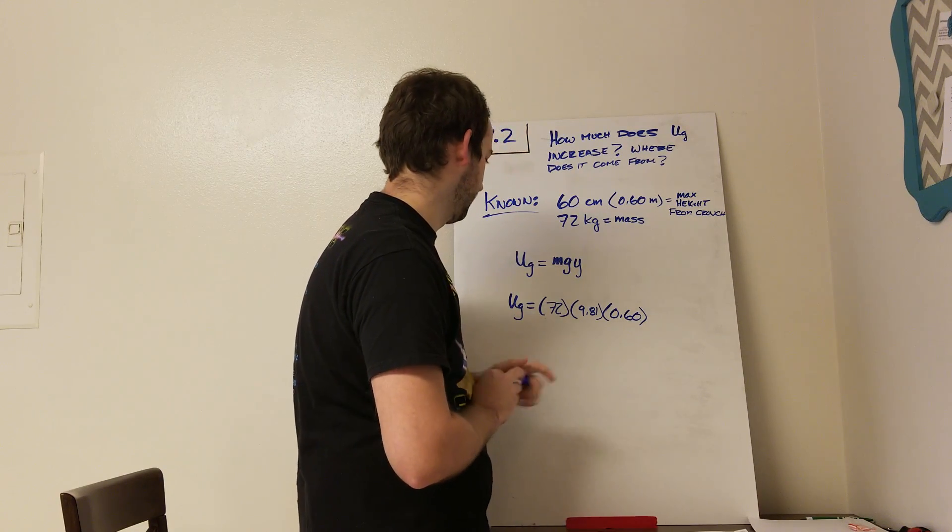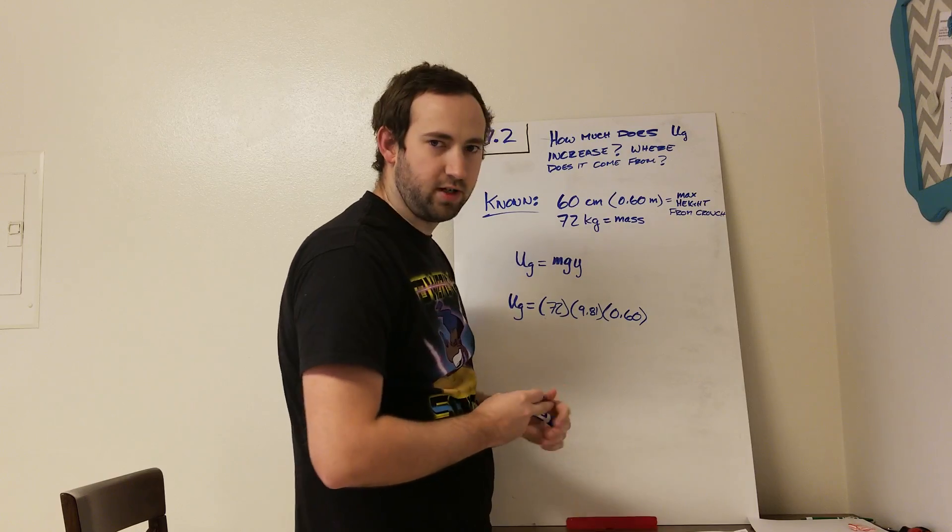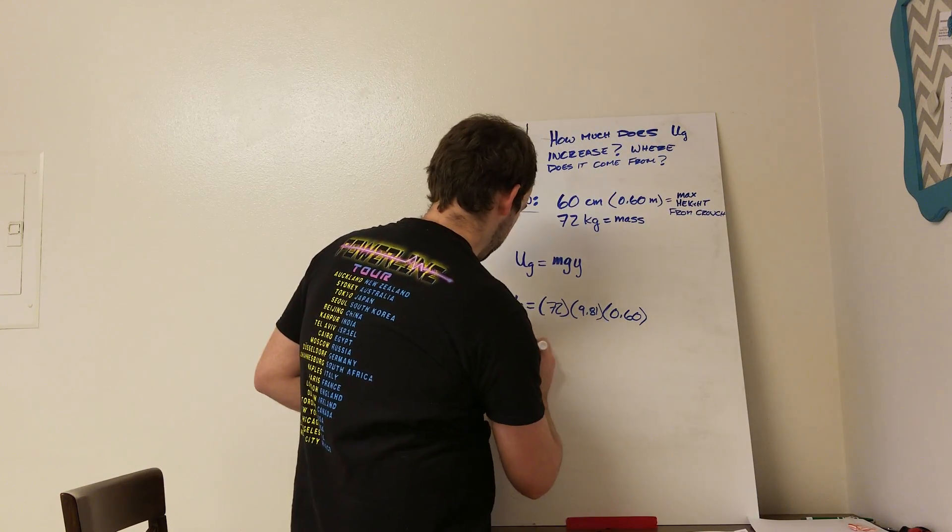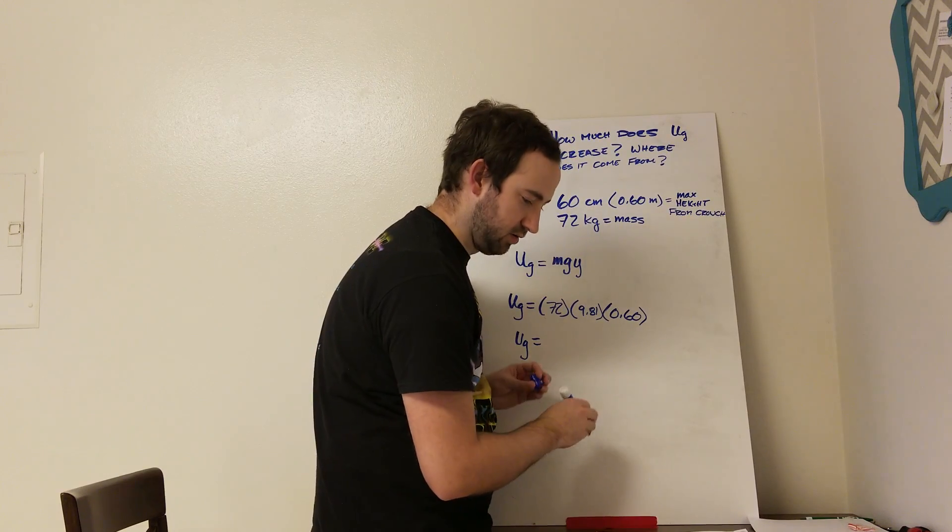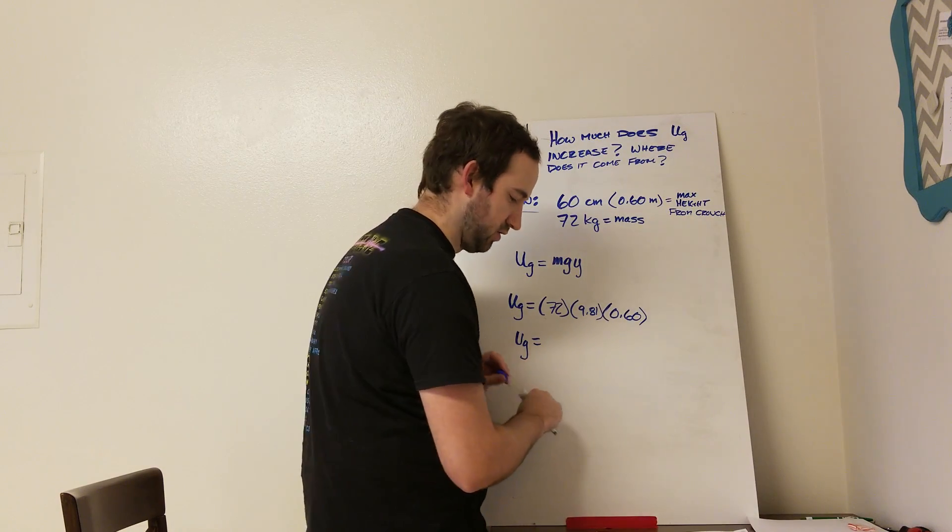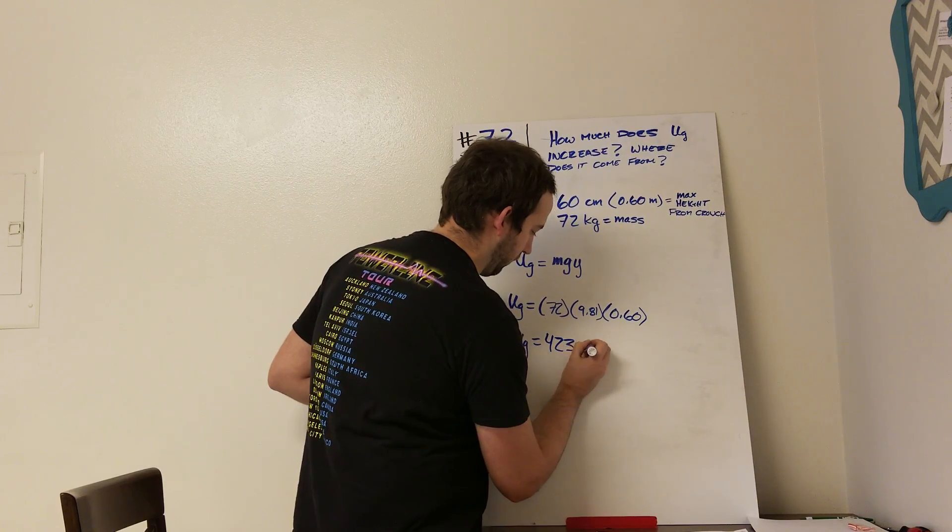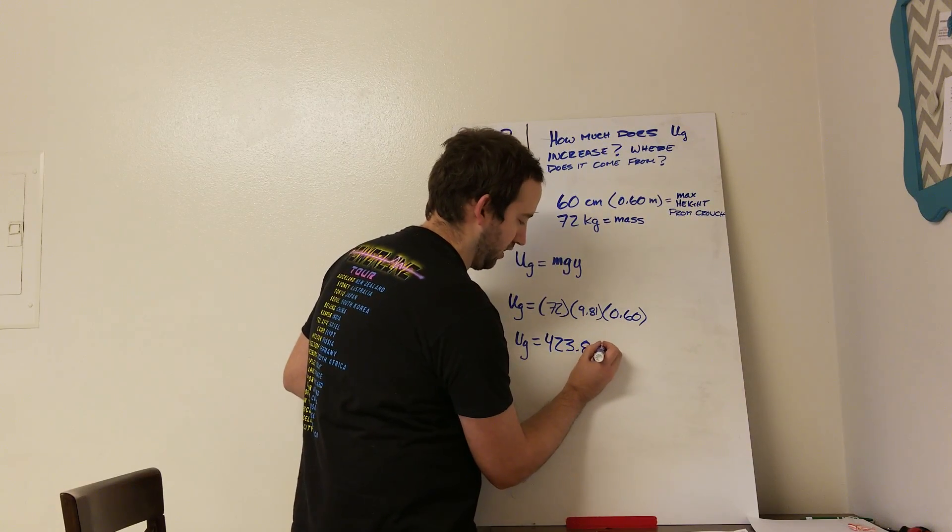Alright, so now we just throw this into our calculator, and we end up with that gravitational potential energy being 423.8 joules.